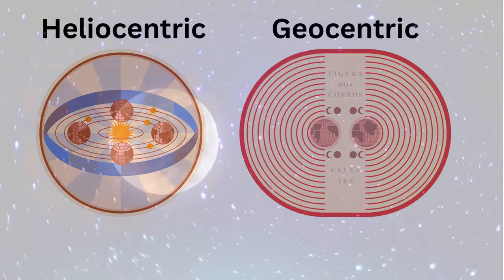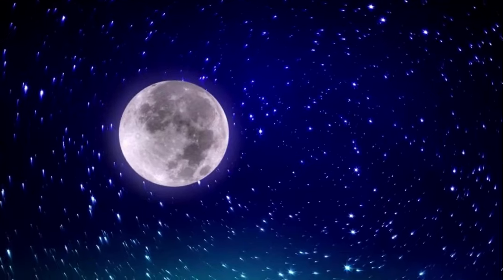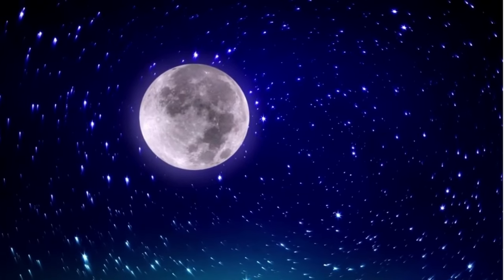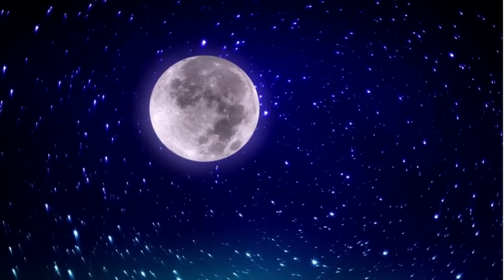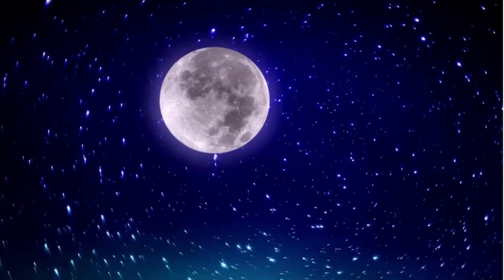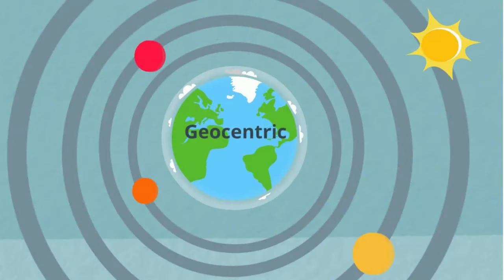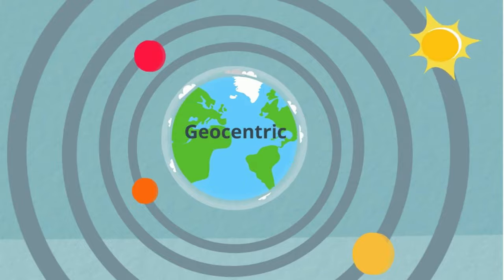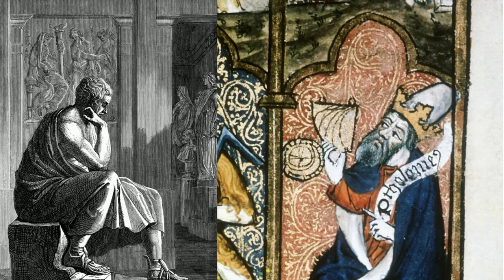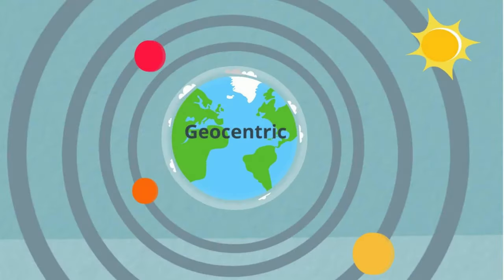From the perspective of the stars moving, it is very easy to assume that the Earth is at the center of the universe. This was the accepted theory called the geocentric model for many years. Great minds like Aristotle and Ptolemy proposed and supported this view of the universe. Geocentric means Earth-centered and it just seemed right.